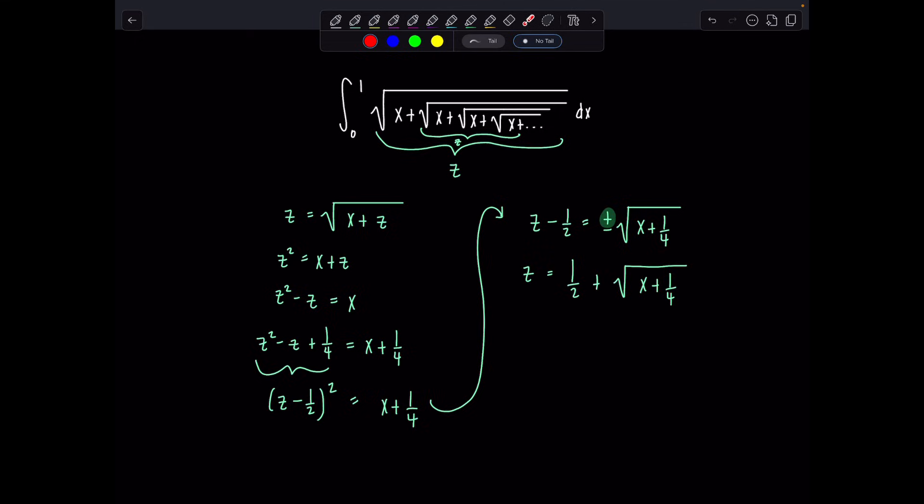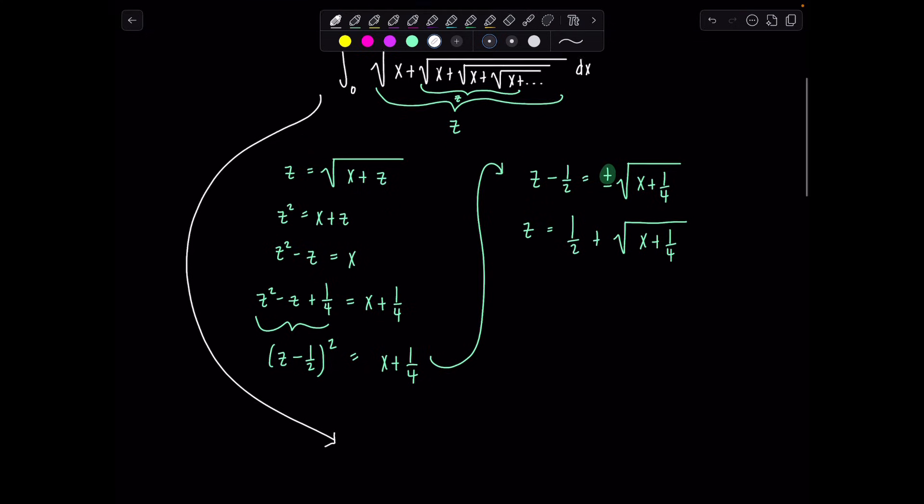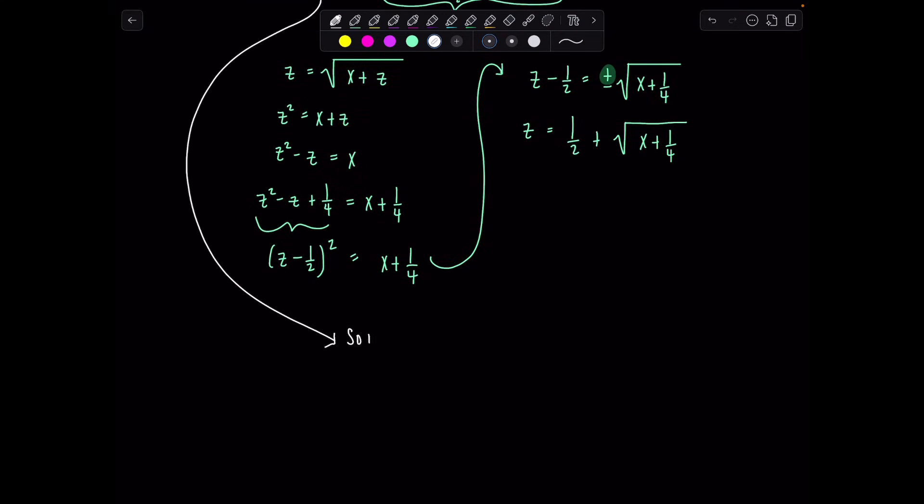And then it's a very simple integration problem that a Calc 1 student could do. So we have integral from 0 to 1 of 1 half plus, I'm just going to rewrite this already as x plus 1 fourth to the 1 half dx.